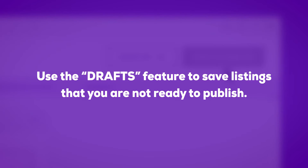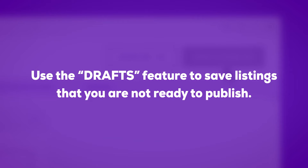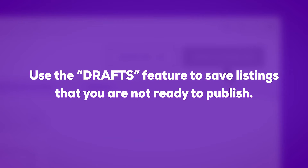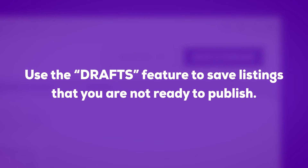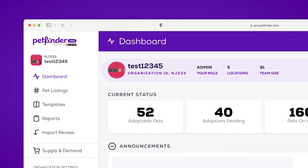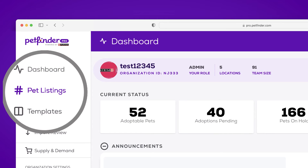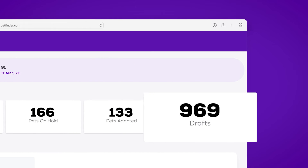If you're not ready to publish the listing, use drafts to save your progress by clicking Save in the upper right hand corner or hitting Ctrl-S on your keyboard. To access your saved drafts, go to the Pet Listings menu or click the drafts number on the Pro Dashboard.